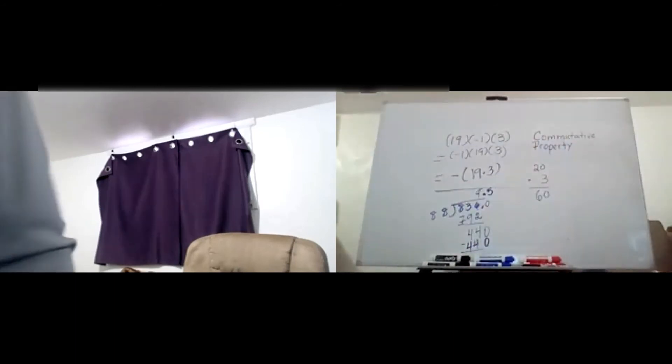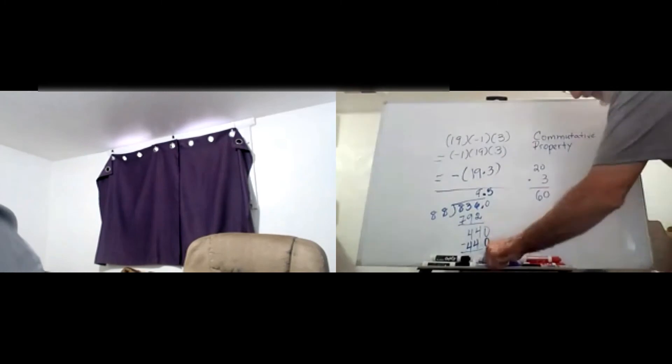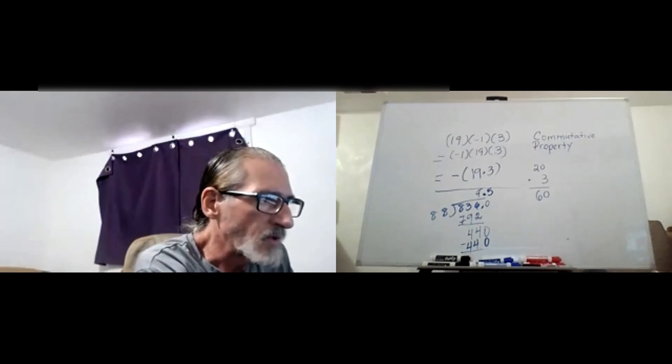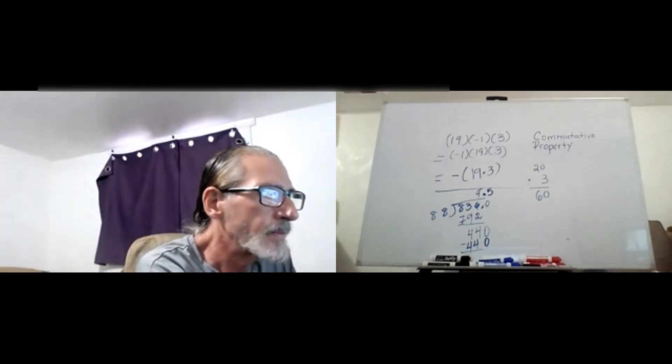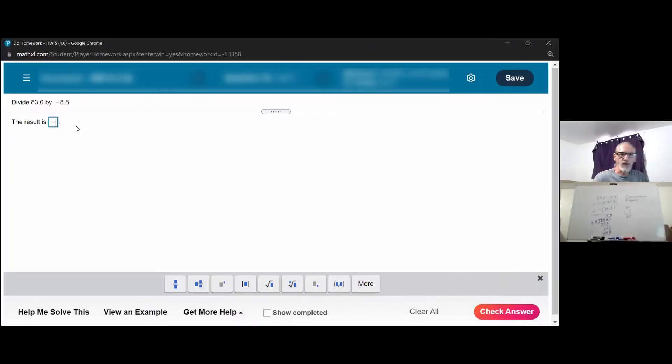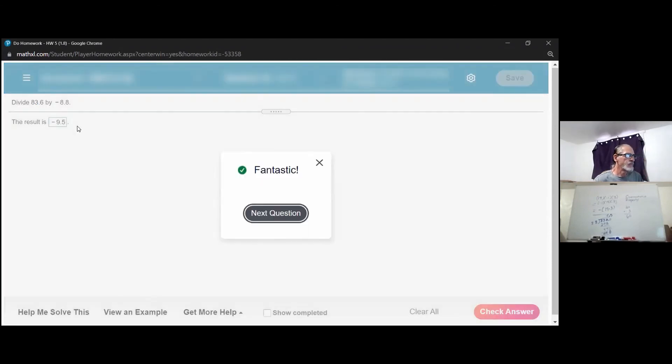Exactly 9.5. Let's make sure that our online homework system takes that answer. We already knew because there were two numbers and they were different signs that it would be negative, so negative 9.5 and we're good.